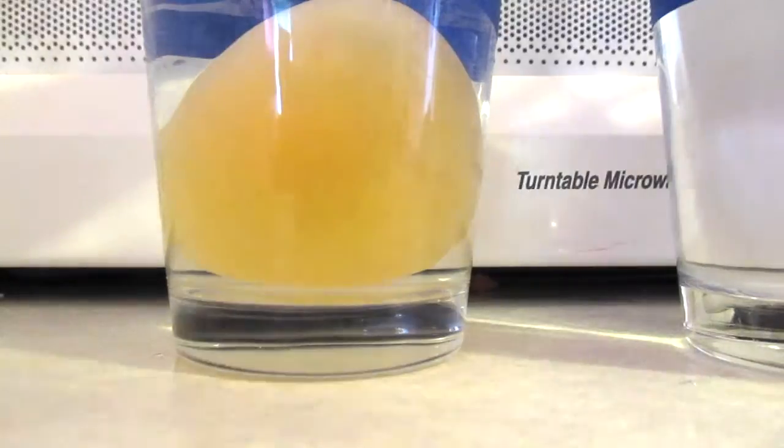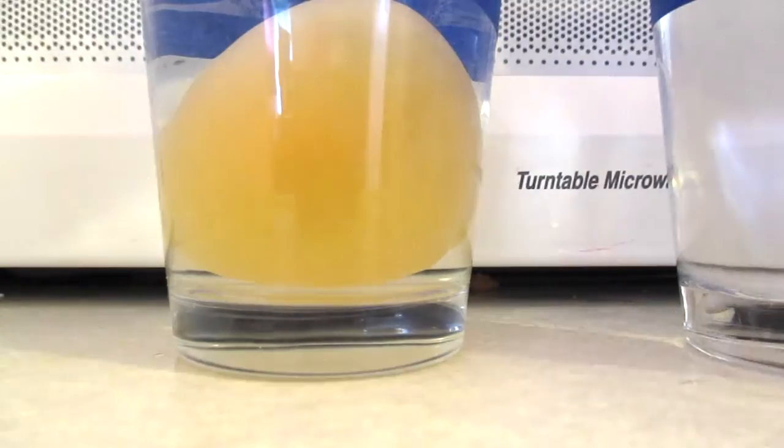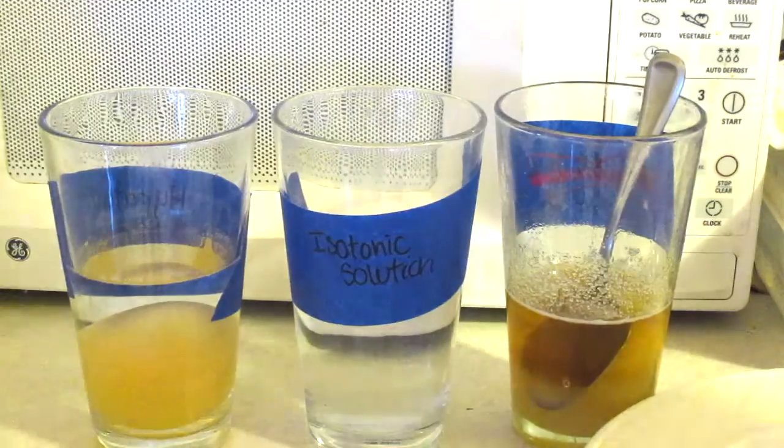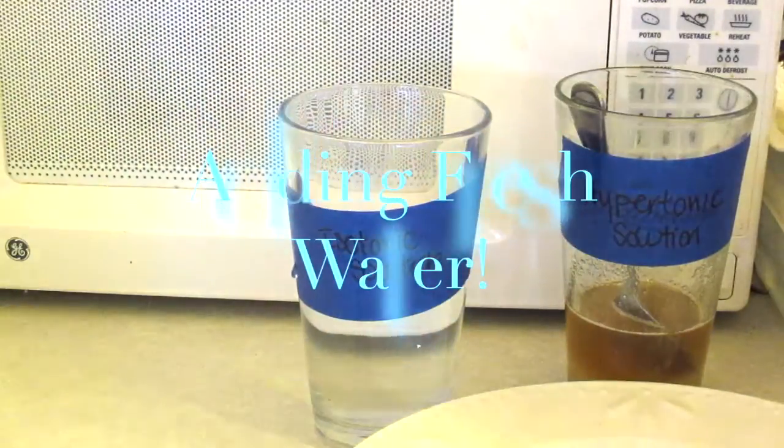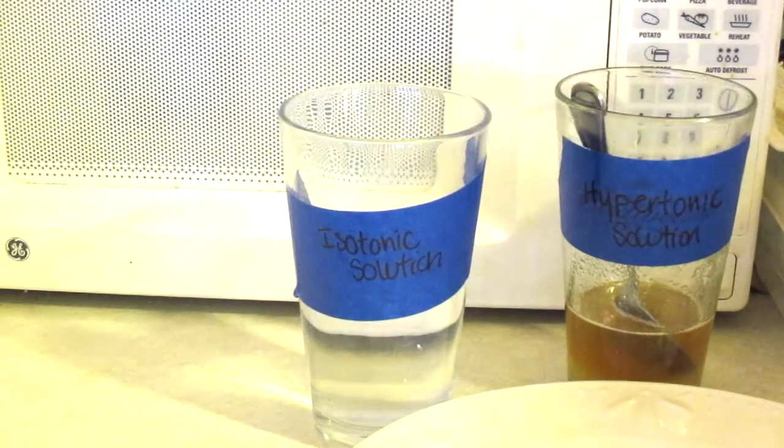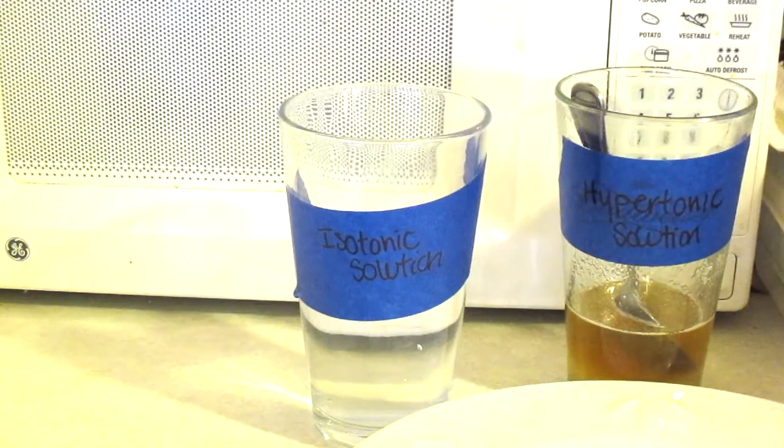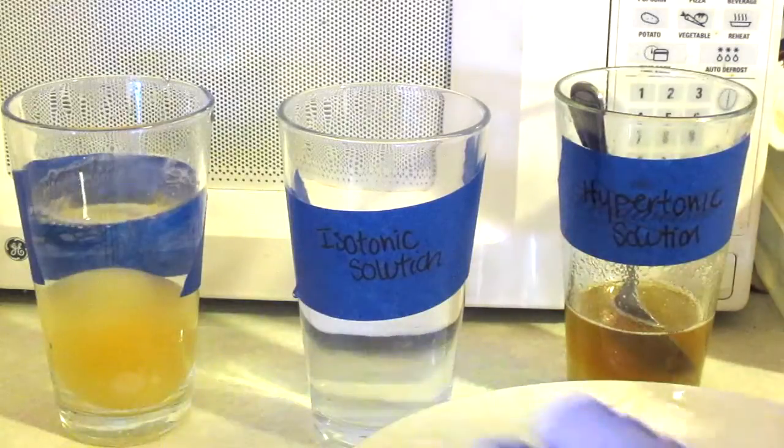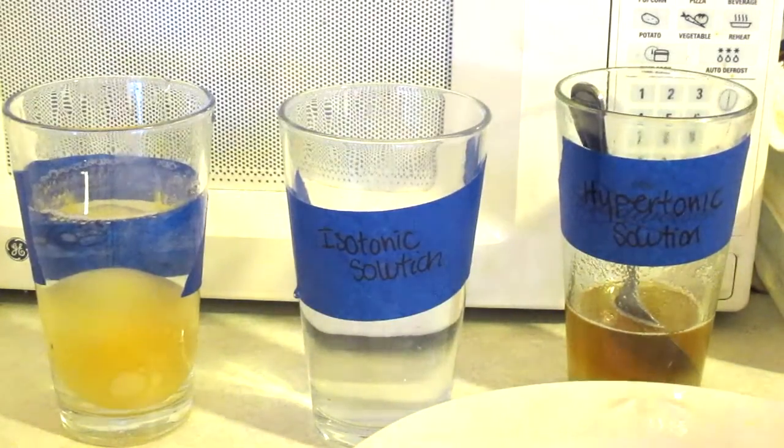Now let's switch over to the egg that we put in the hypotonic solution now and see what's going on with it. You can tell that it's already puffed up nicely. If you remember before, it was a little bit wrinkly, not too terribly much, but it's puffing up really nicely now. After I started looking in the hypotonic solution glass, I noticed that some of the syrup was getting kind of thick. It wasn't as clear as it was when I first put the egg in. So I'm just going to add some fresh water to that.